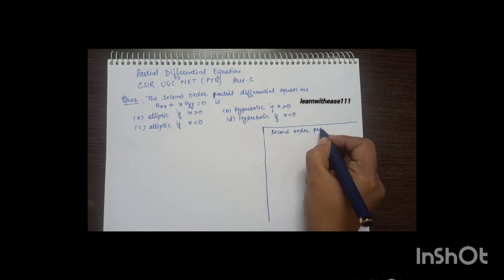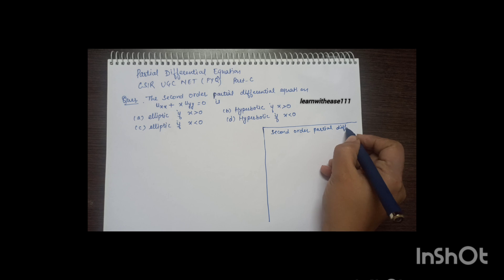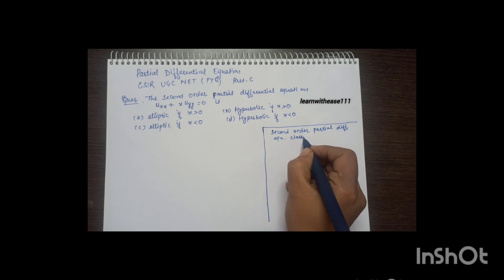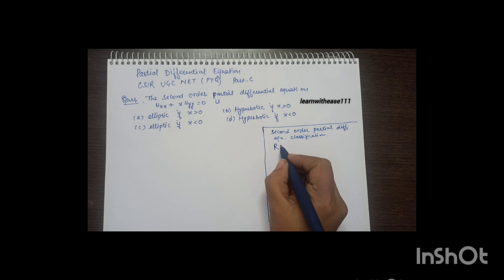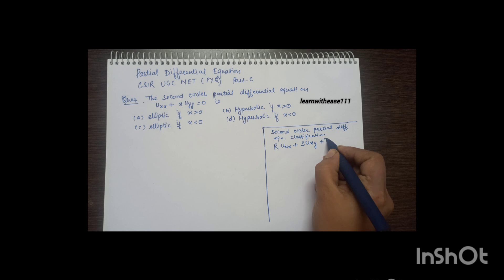We need to understand the classification of second order partial differential equations. The general form is R*uxx + S*uxy + T*uyy, where uxx means the partial derivative with respect to x twice.